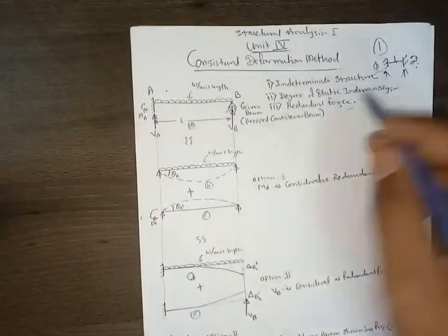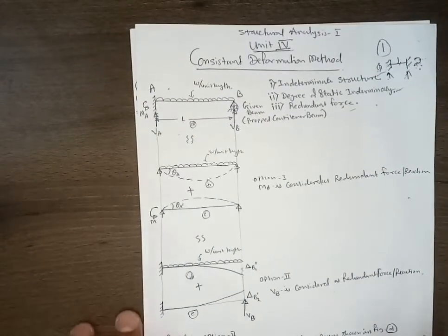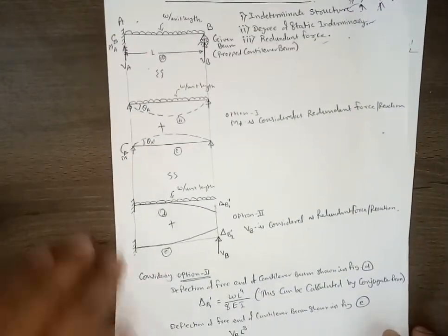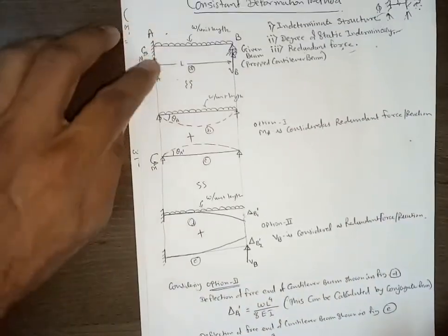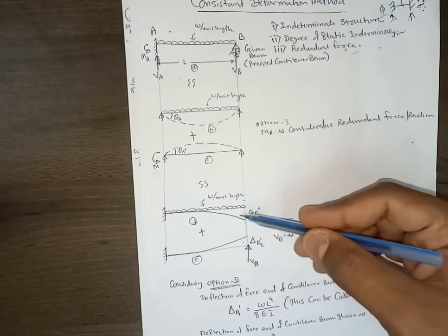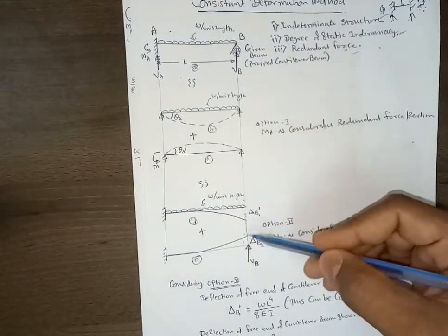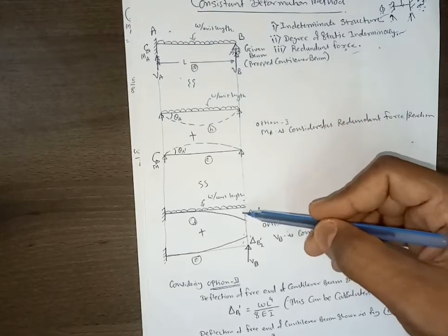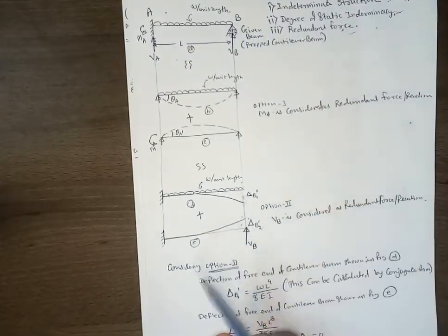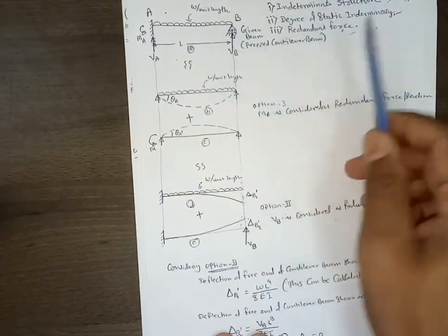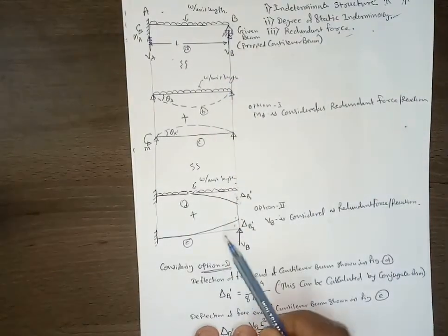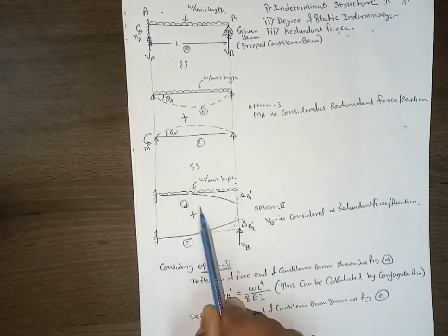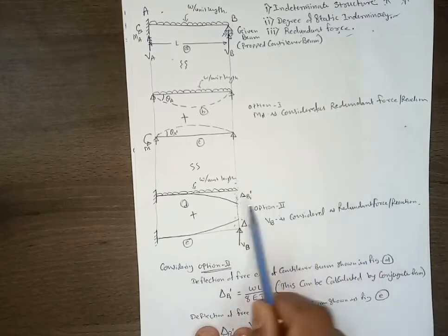Now we come to the consistent deformation method itself. We convert the actual indeterminate problem into two beams using the principle of superimposition. We can consider two separate effects and add them to get the actual effect. We remove VB so that the beam becomes a determinate cantilever beam. If we remove the support at point B, the beam will deflect, and that deflection is called delta-B-dash-one.